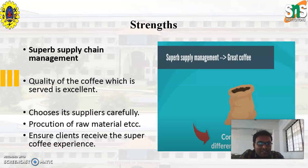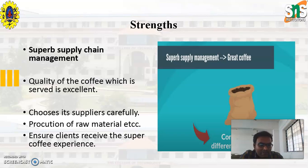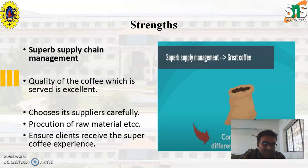Another major strength is its superior supply chain management. It gives the company excellent quality. Starbucks chooses its suppliers carefully — where they source raw materials such as coffee beans and where they sell their products. This is one of the most important factors in supply management. They ensure 100% customer satisfaction and that clients receive a superior coffee experience.